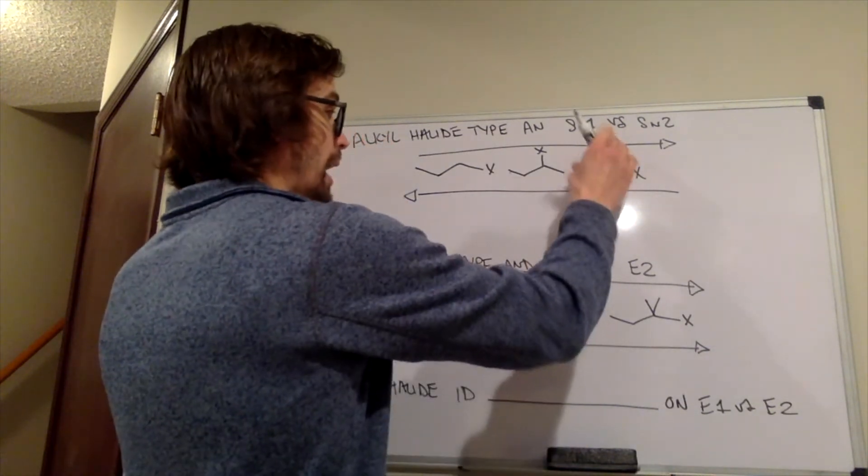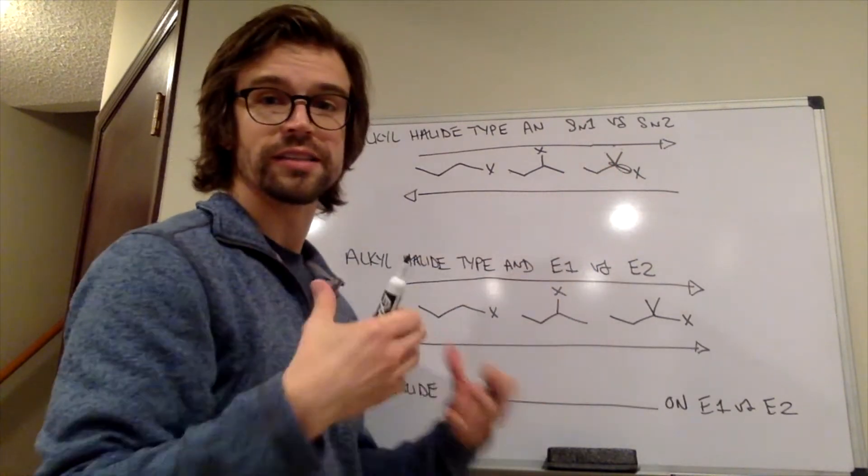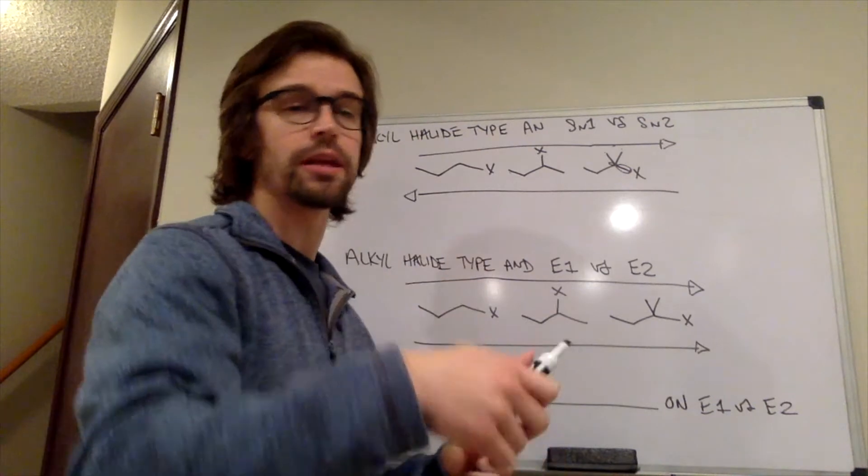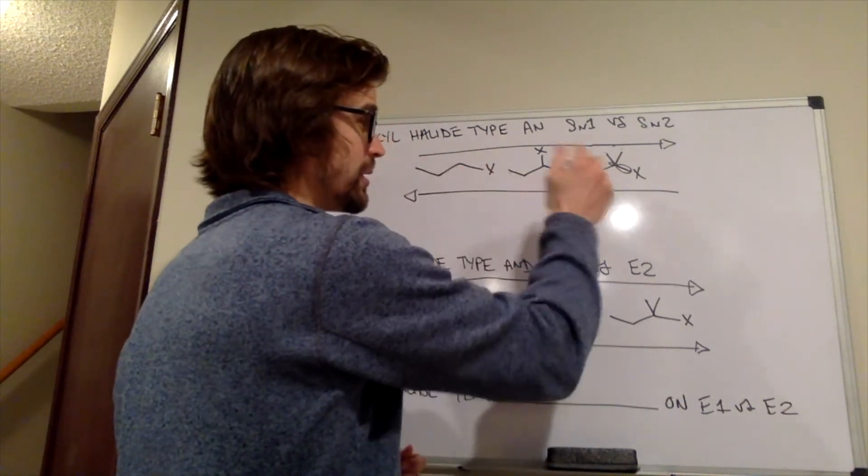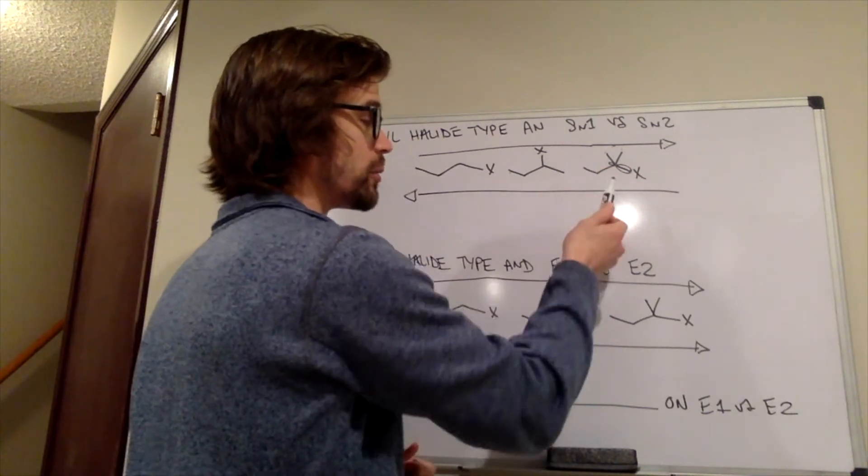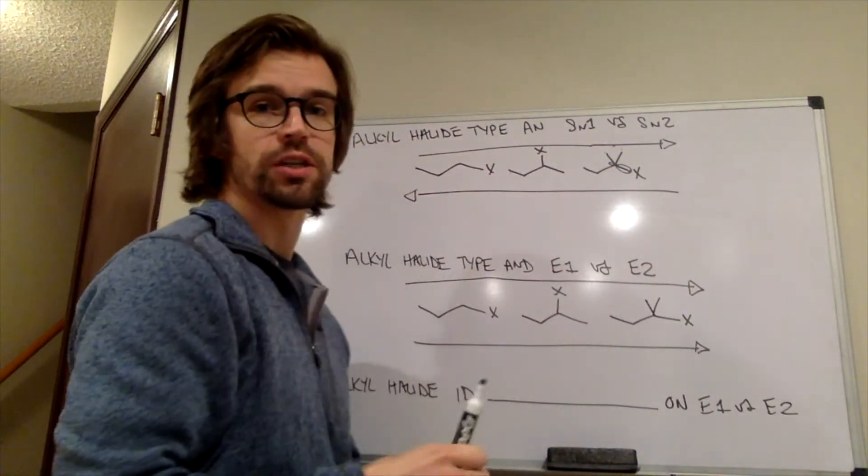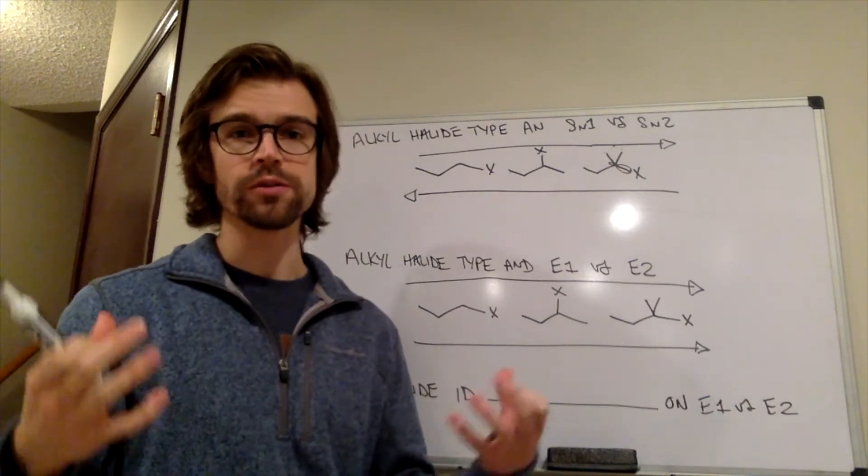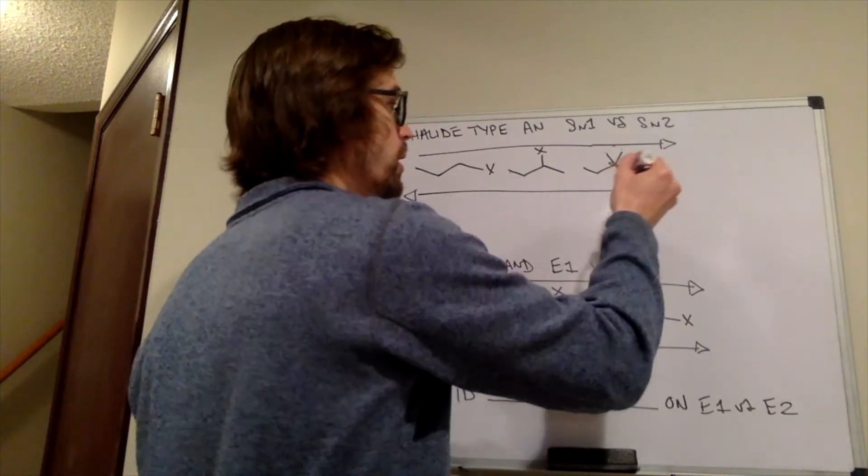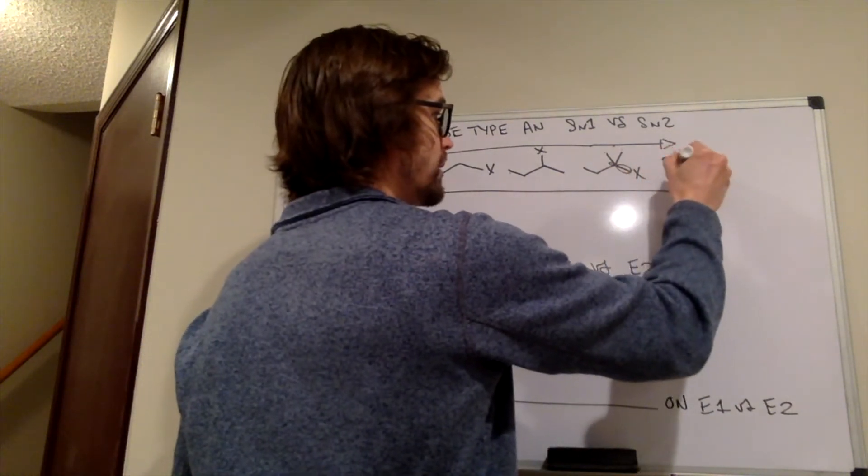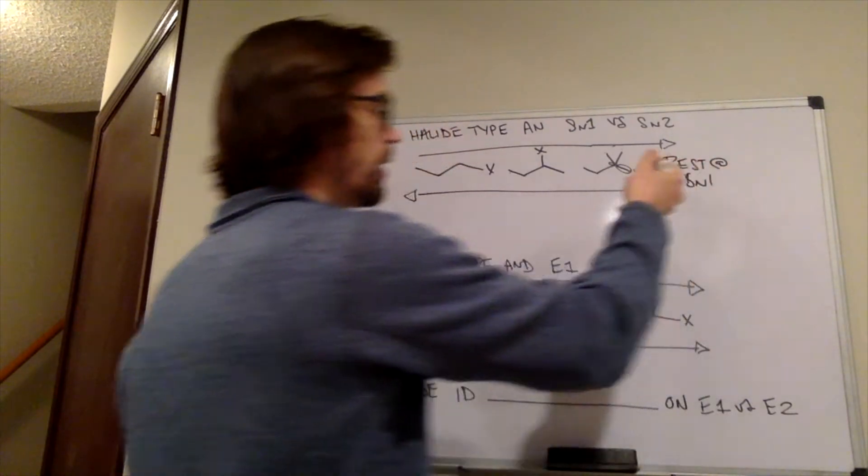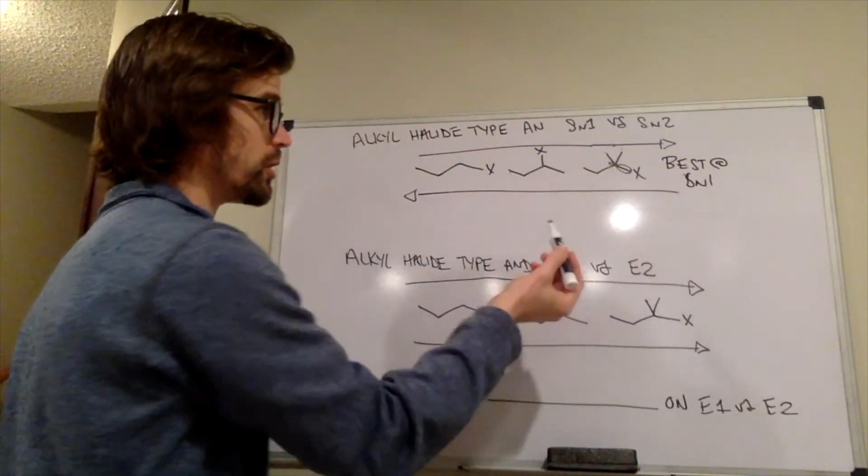So SN2 is really challenging to work on a really substituted alkyl halide because the nucleophile has a really hard time getting to that anti-bonding orbital. So SN2 is not going to work very well on this one. What about SN1 on this one? Well, SN1 requires the formation of a carbocation, and what's the most stable type of carbocation? A tertiary carbocation is most stable. So this side is best at SN1 because it's going to form that tertiary carbocation.